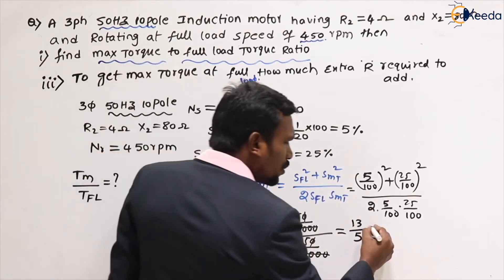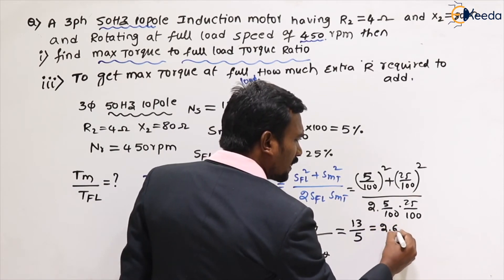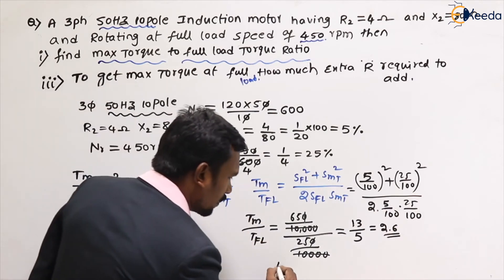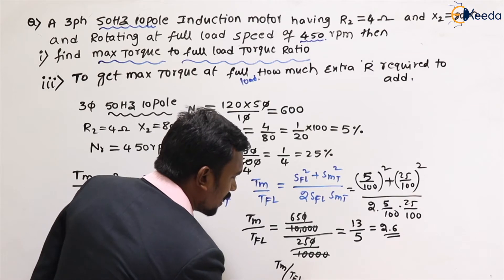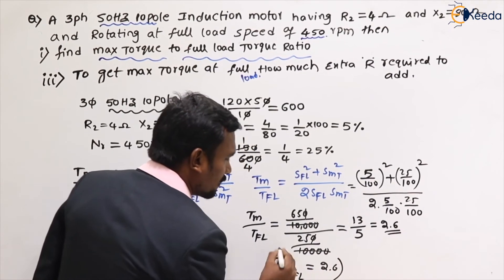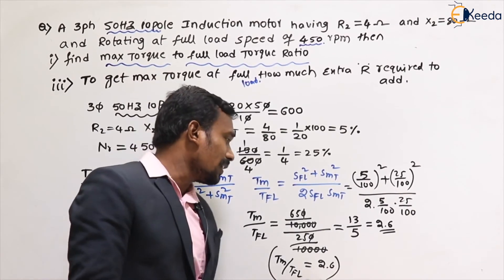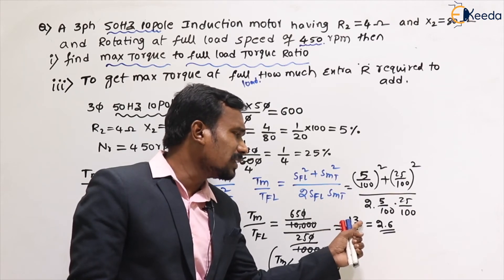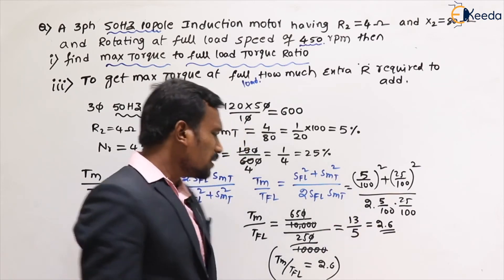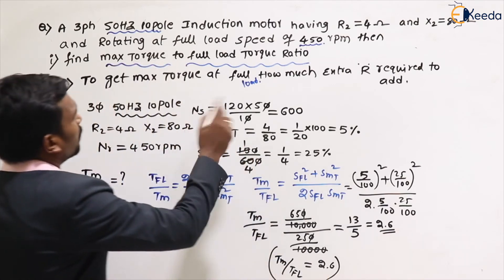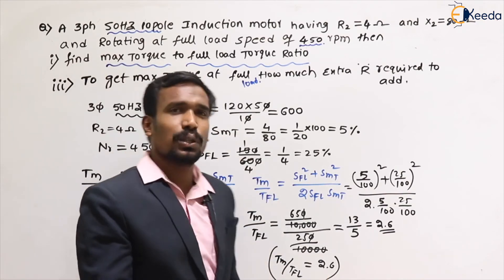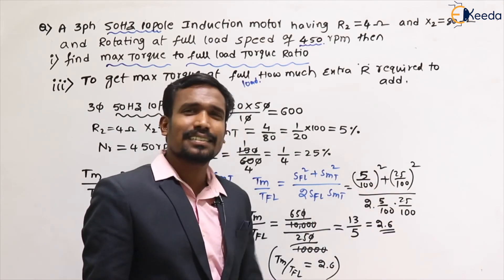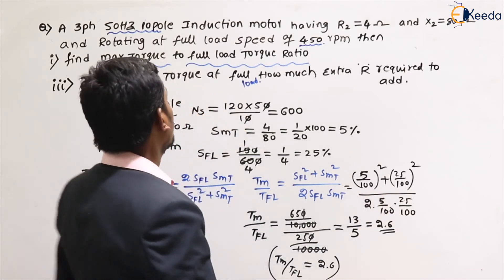So 13/5 = 2.6. The maximum torque to full load torque ratio is 2.6. That completes part one. The ratio of maximum torque to full load torque is 2.6 — quite simple once you cancel the terms.